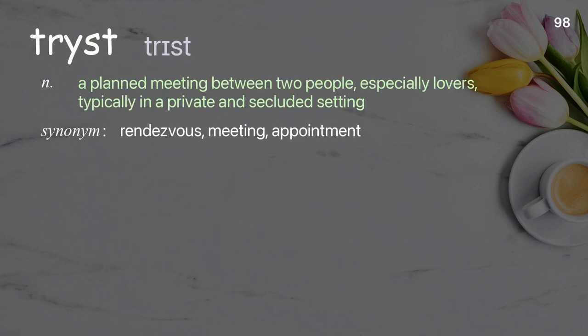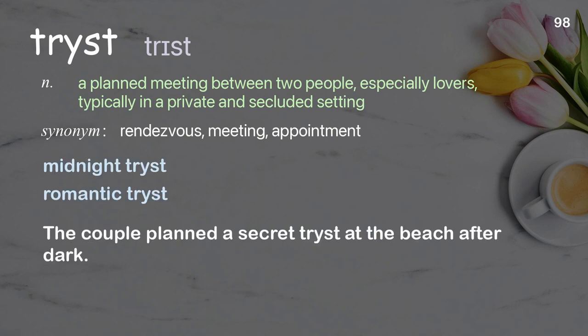Tryst: a planned meeting between two people, especially lovers, typically in a private and secluded setting. Examples: midnight tryst, romantic tryst. The couple planned a secret tryst at the beach after dark.